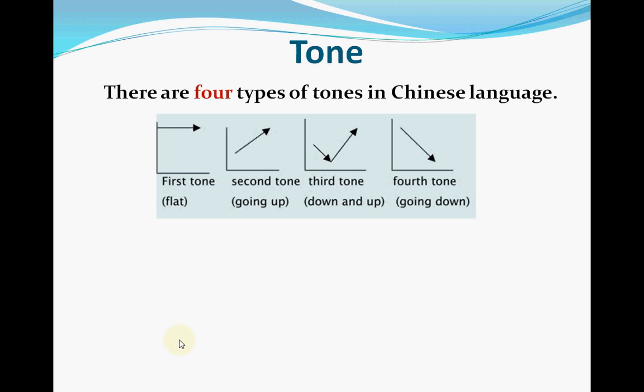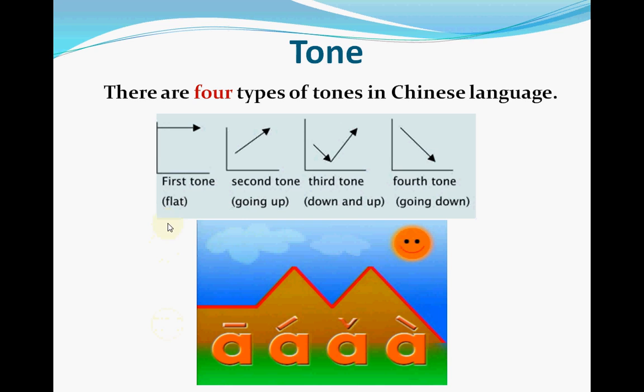Let's move on to tone. There are four types of tone in Chinese language. The first tone you pronounce flat. The second tone goes up. The third tone goes down and then up. The fourth tone goes down. Let me use 'a' as an example to pronounce the four tones: ā, á, ǎ, à. See? They are totally different.